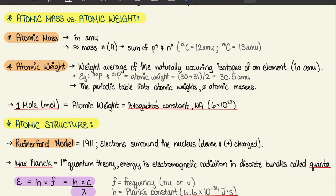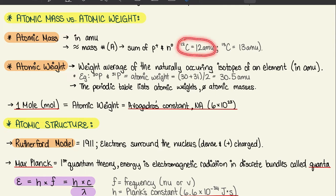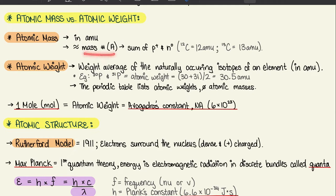We're going to jump to 1.2, which is differentiating between atomic mass and atomic weight. For the atomic mass, the units are atomic mass units, or AMU. The atomic mass is the sum of both protons and neutrons, and it's the same as the mass number A. For example, carbon-12 is 12 AMU, and carbon-13 is 13 AMU. Whatever the mass number of that element, that will be your atomic mass.